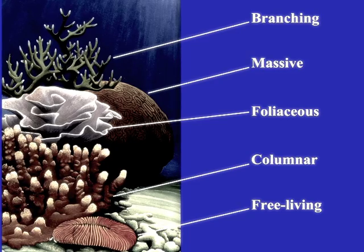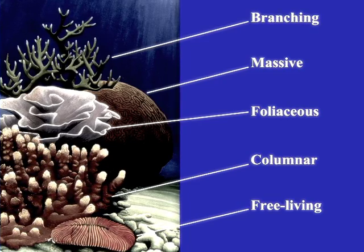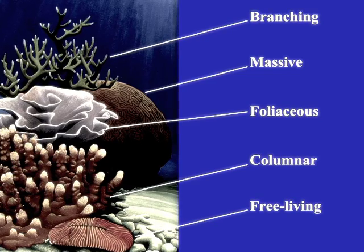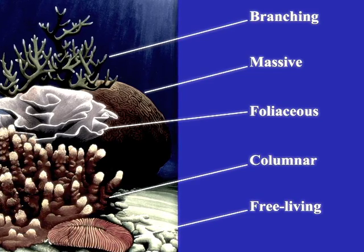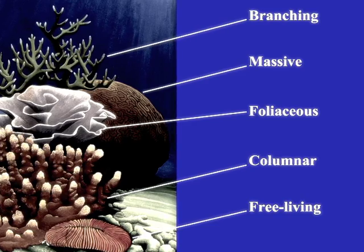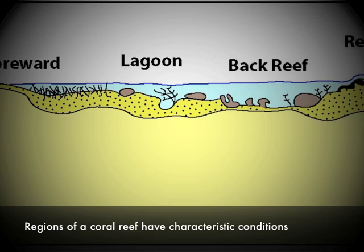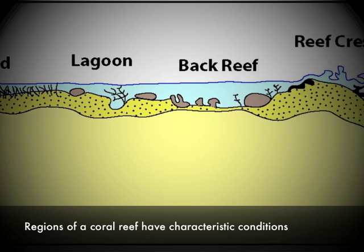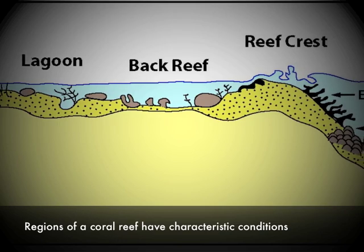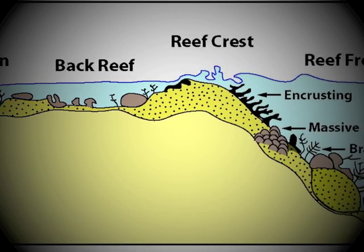Corals come in different shapes and sizes. Different morphologies provide different corals with a competitive advantage for acquiring nutrients under different environmental conditions. As a result, coral morphologies differ on a reef in response to wave strength, sedimentation, and the amount of sunlight.